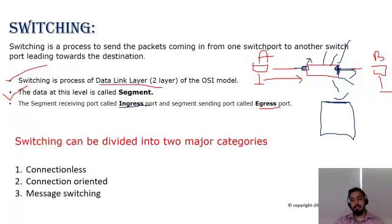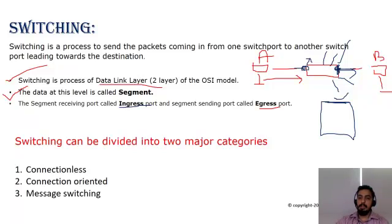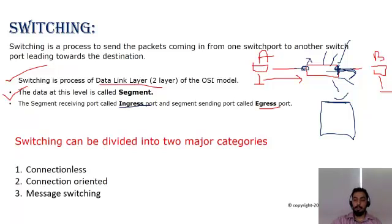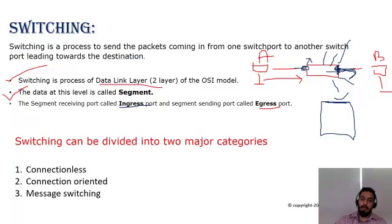The forwarding decision is based on the MAC table. If you'd like to know more about how the MAC table is learned, please refer to my other video. Using the MAC table, the switch takes a decision and sends the data out to the appropriate port — this process is known as switching.